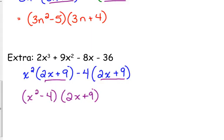x² - 4 is the difference of perfect squares. So we're not actually finished with this problem. x² - 4 factors into (x + 2)(x - 2), and then we need to bring down that 2x + 9. So if I were solving this equation, I'm just factoring it, but if that were equal to 0, and I wanted to know what x values would make that equal to 0, by factoring it like this, I know the three solutions: negative 2, positive 2, and negative 9 halves.